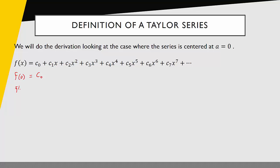Well, the derivative of a constant is zero, and the derivative of a constant times x should be just the constant. Then I'd have 2c2x, 3c3x squared, and so on and so forth.